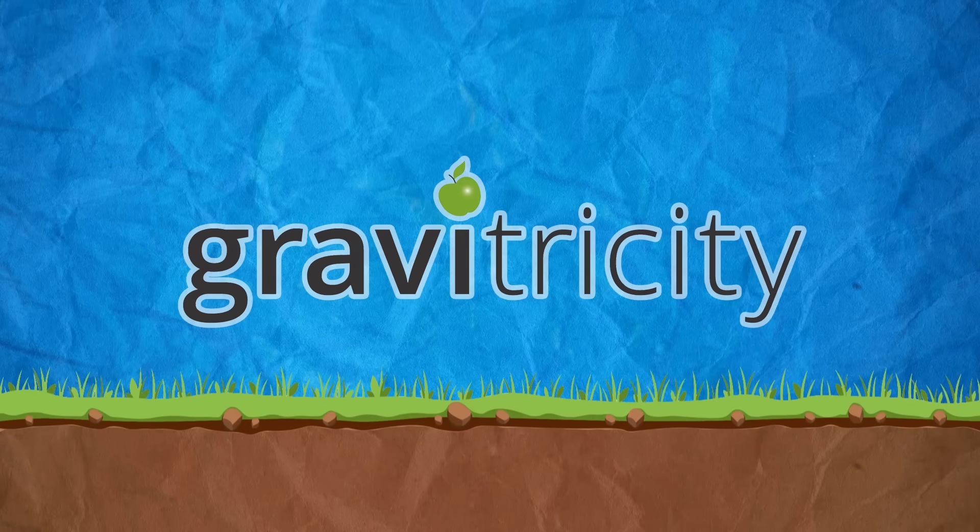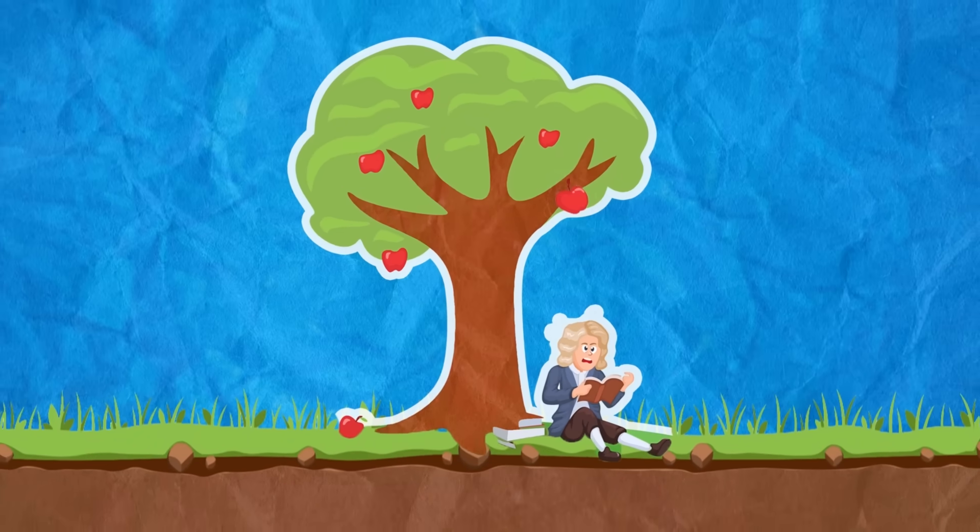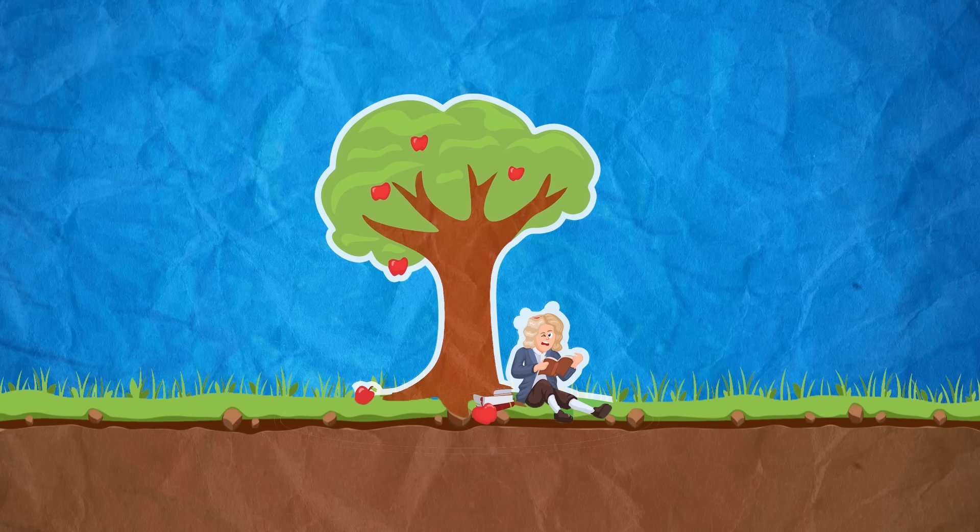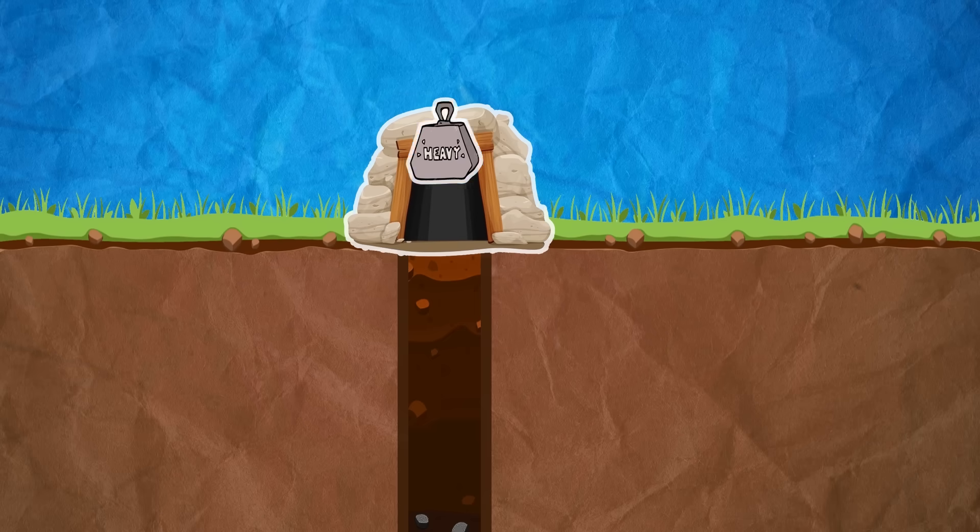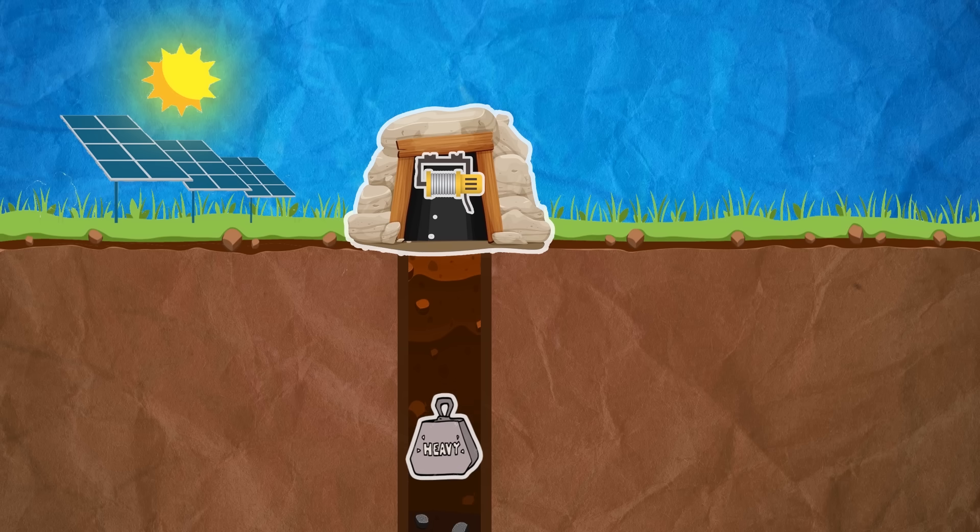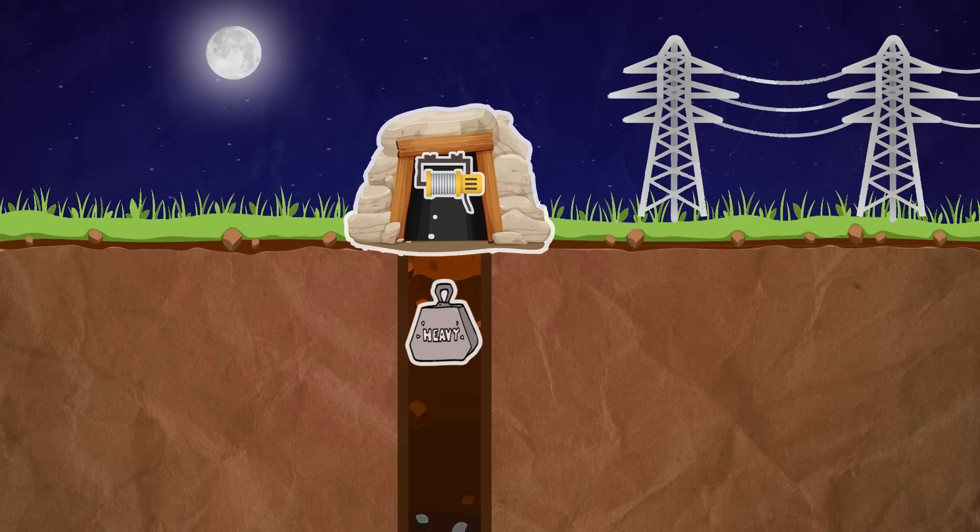One of those comes from the startup Gravitricity which came up with the simple yet brilliant idea of storing energy using gravity. Their idea is to equip abandoned mineshafts with a heavy weight attached to a winch. When there is an excess of energy the weight can be lifted, and when the demand for energy is high the stored energy can be released by letting the weight drop and use the motor of the winch as a generator.